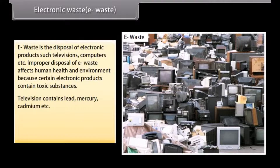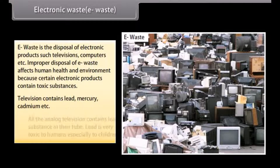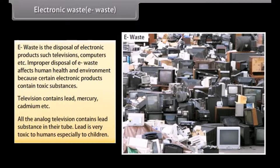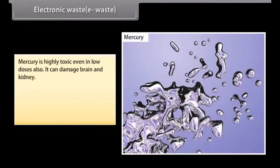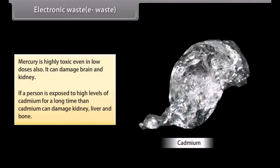Television contains lead, mercury, cadmium, etc. All analog televisions contain lead substance in their tube. Lead is very toxic to humans, especially to children. Mercury is highly toxic even in low doses and can damage the brain and kidney. If a person is exposed to high levels of cadmium for a long time, it can damage the kidney, liver, and bone.